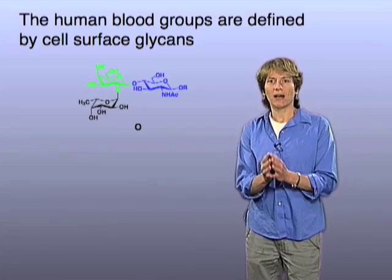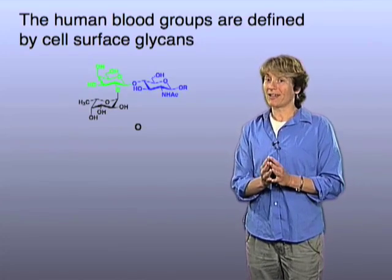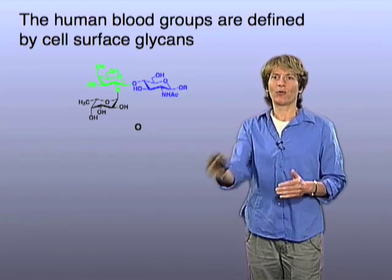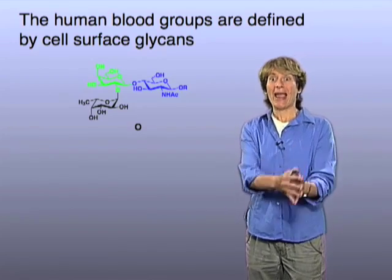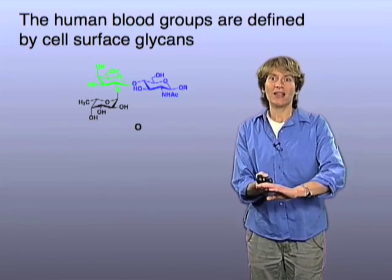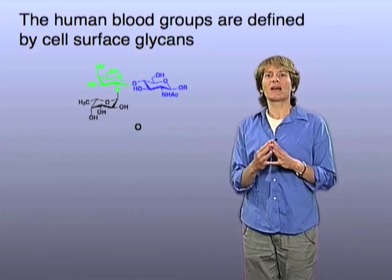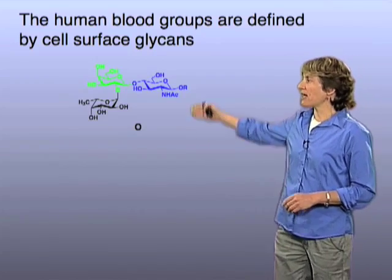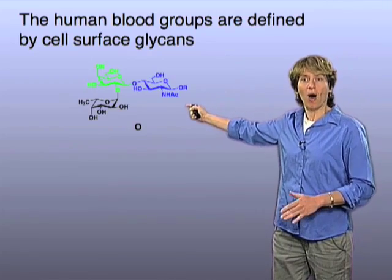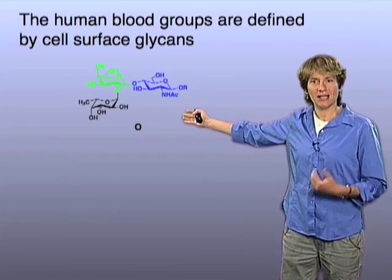It turns out that your blood type is determined by sugars. Hopefully all of you know your blood type — mine is O positive. Some of you might be blood type A, some will be blood type B, and some might be blood type AB. What it means to be O or A or B or AB is simply what are the structures of the sugars on your blood cells. As someone who is blood type O, my blood cells have this trisaccharide structure on the surface, on the glycoproteins and some of the glycolipids. That defines me as blood type O.